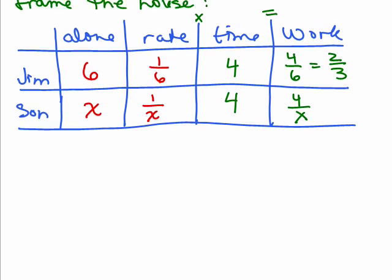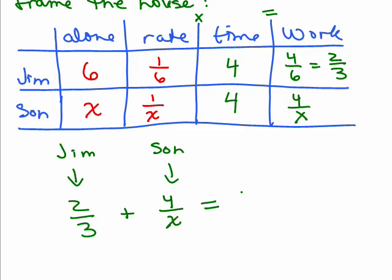But let's go ahead and just write down the equation. So there's two ways people might think of it. You might say the amount of Jim's work that he gets done and his son's work is going to get the one job done. So Jim is two-thirds plus his son which is four over x equals one complete job done. Somebody else might say well if Jim got two-thirds of the job done then I know four over x equals one-third. This actually is an equivalent equation because if you subtract two-thirds from both sides you would get four over x equals one-third because one minus two-thirds is one-third. So either of these equations is going to work.